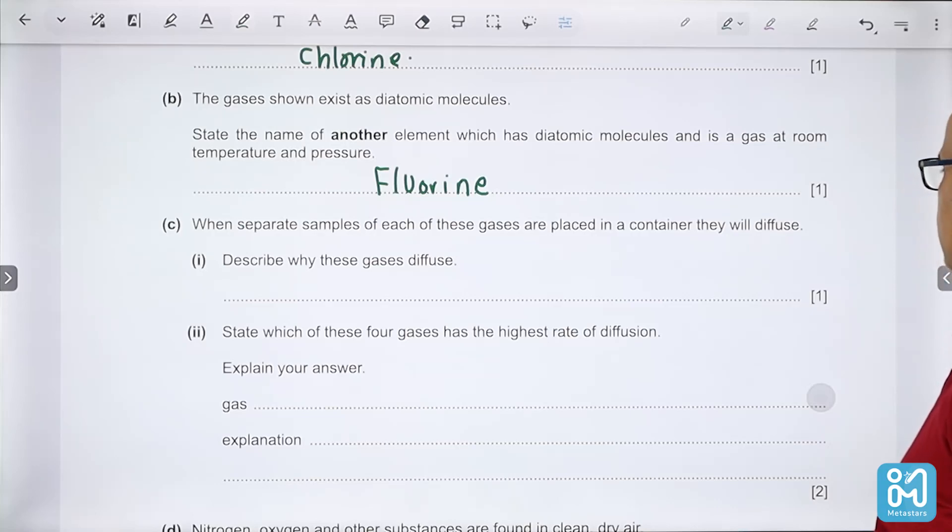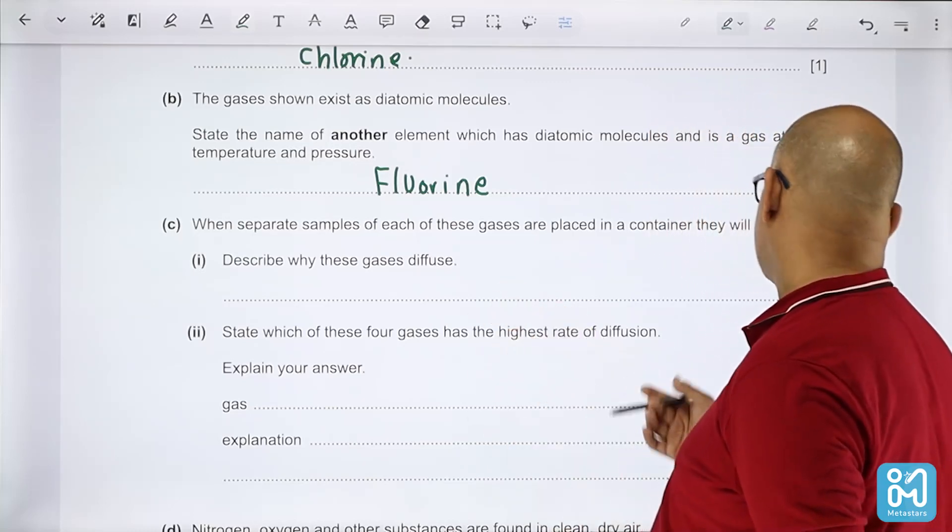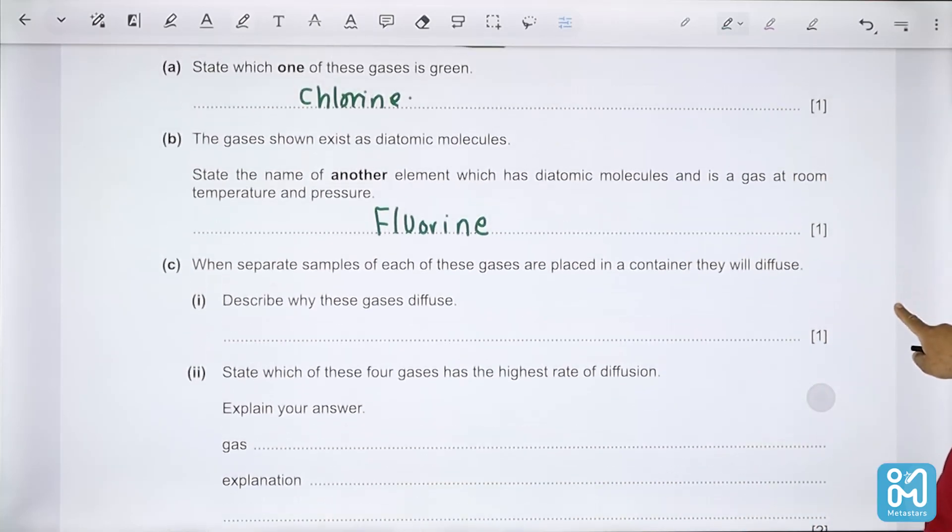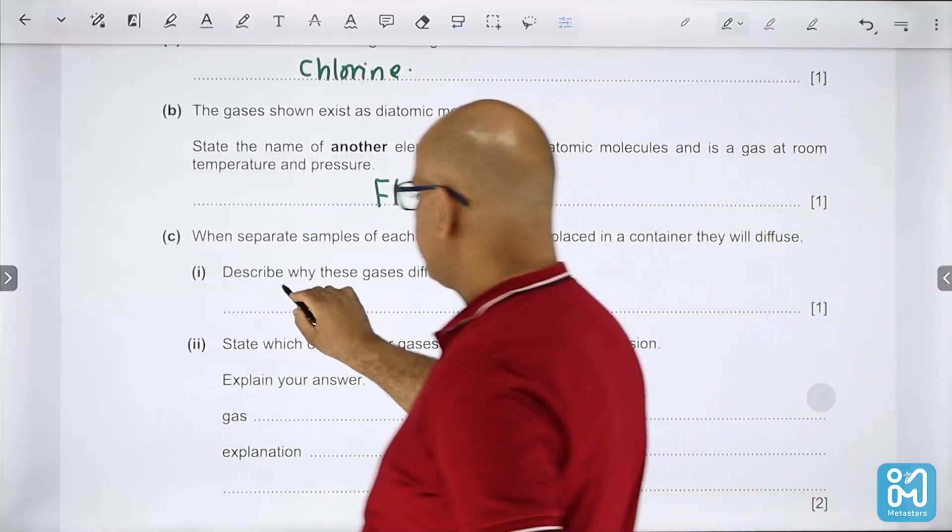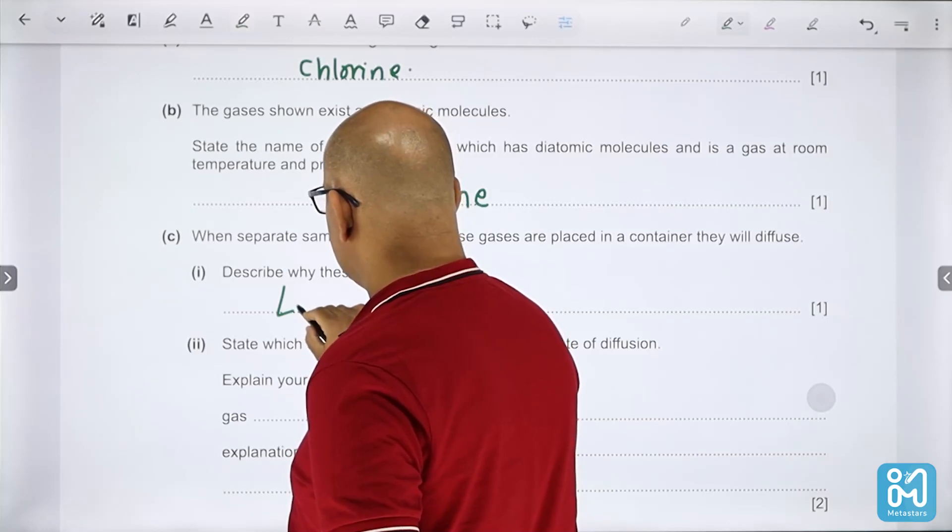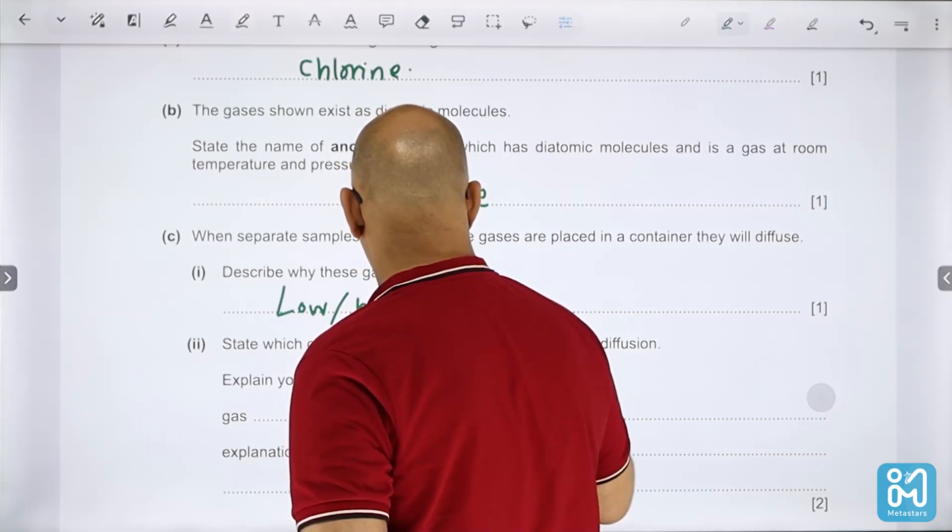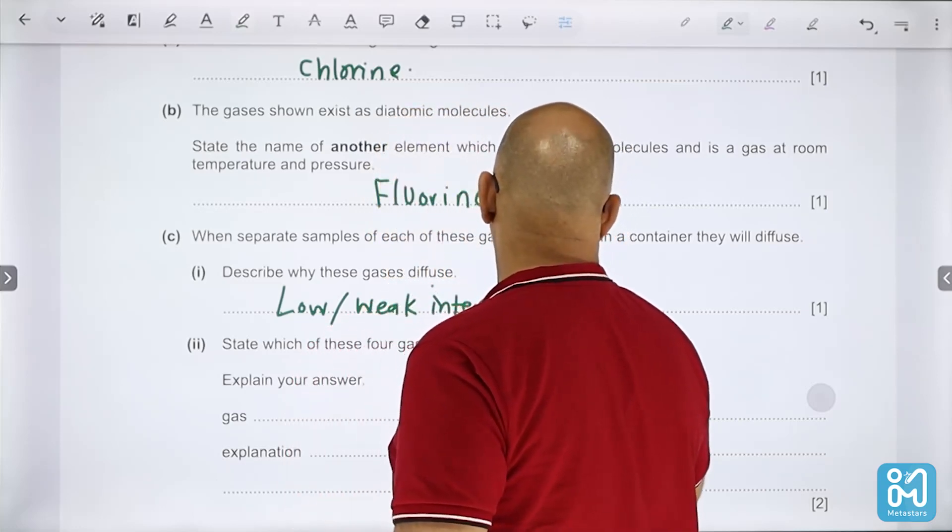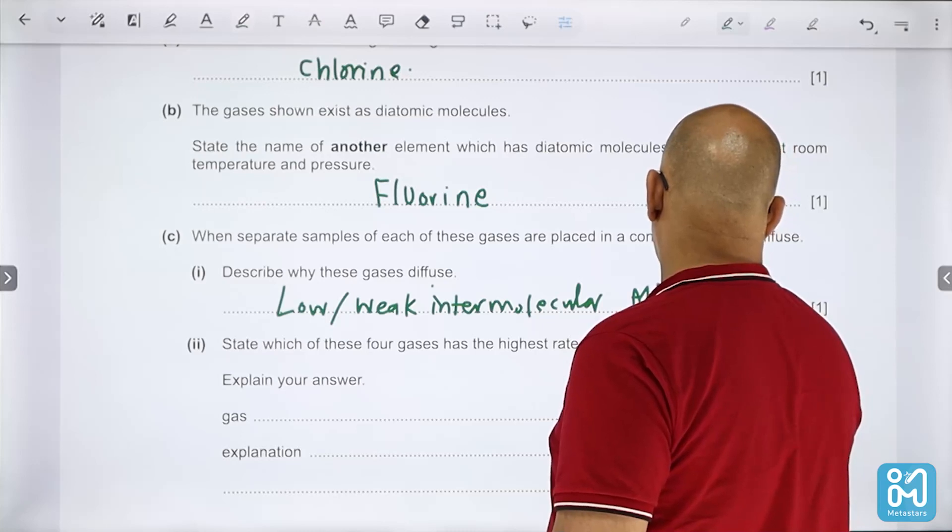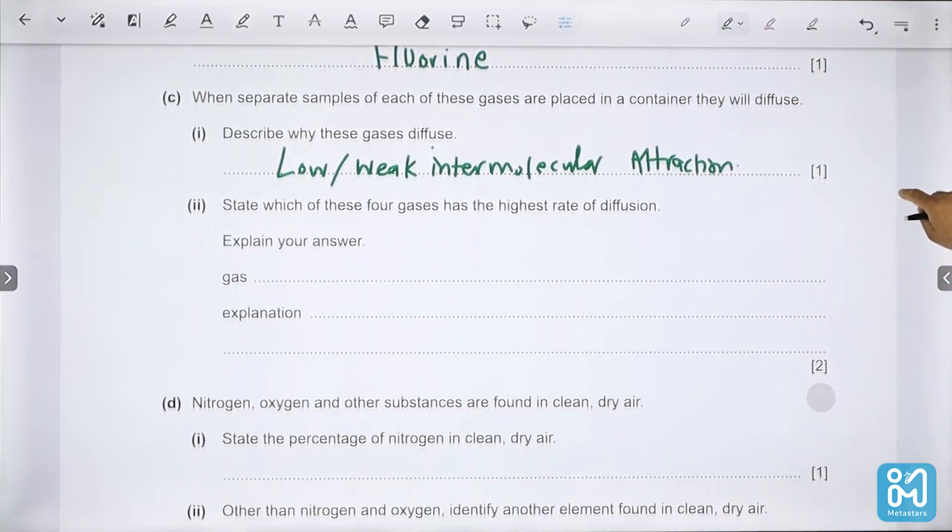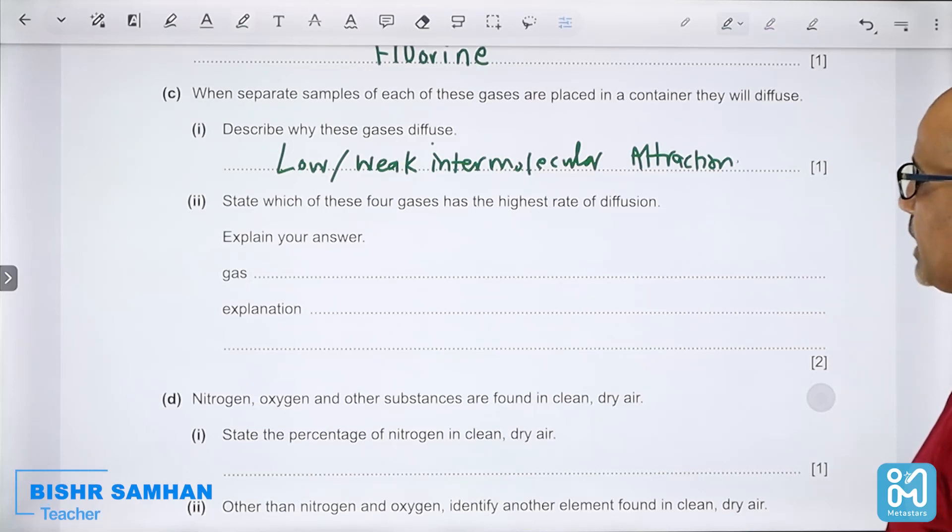When separate samples of each of these gases are placed in a container they will diffuse. Why do these gases diffuse? Because they have low or weak intermolecular attraction between its particles since they are separated a lot.